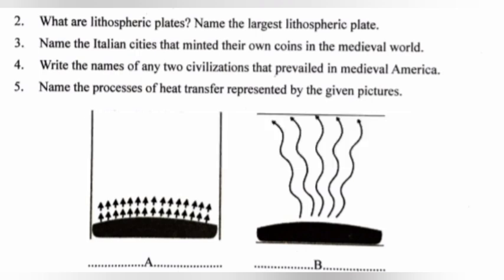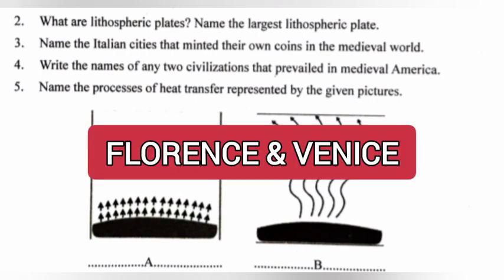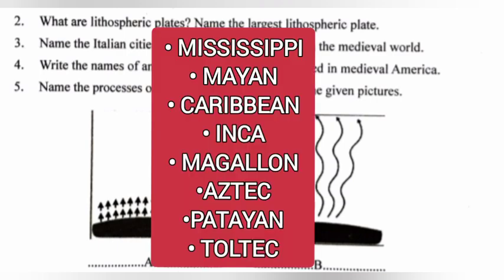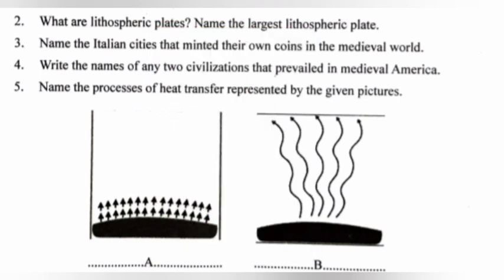Question 3: Name the Italian cities that minted their own coins in the medieval world. Answer: Florence and Venice. Question 4: Write the names of any two civilizations that prevailed in medieval America. Answer: Write any two points.